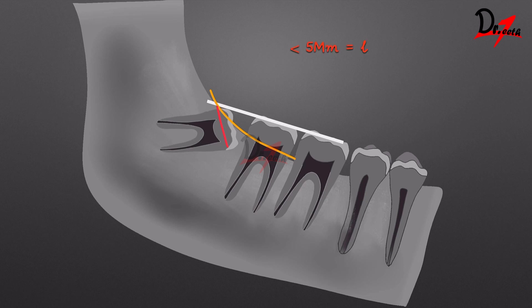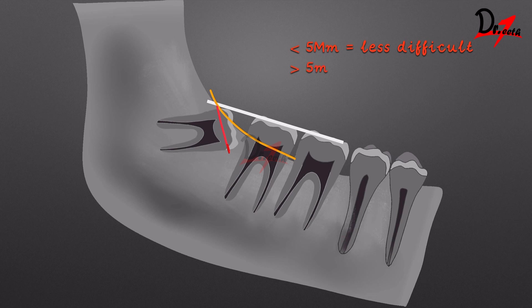If this line is less than 5mm in length, the case is less difficult. For every 1mm increase beyond that, the difficulty increases by 3 times. If it is more than 5mm, it is advised that we extract the molar under general anesthesia. And if it is more than 9mm, it is a very difficult case.